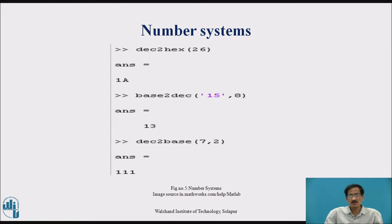base2dec('15', 8) gives 13. dec2base(7, 2) converts decimal number 7 into a number whose base is 2, that is binary. After execution of this, we will get the answer 111, which is a binary number with base 2.